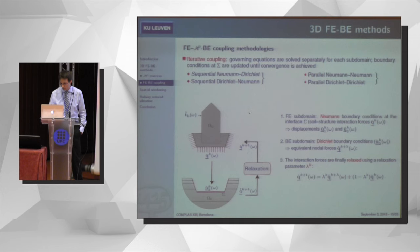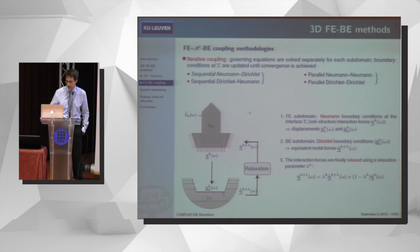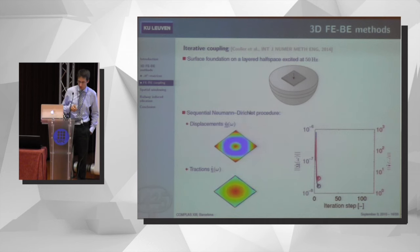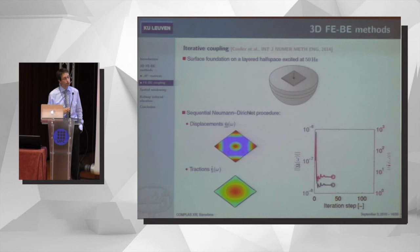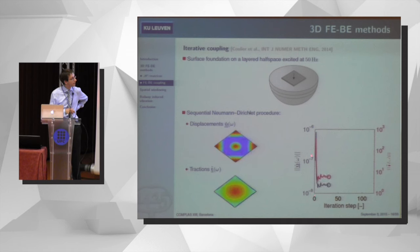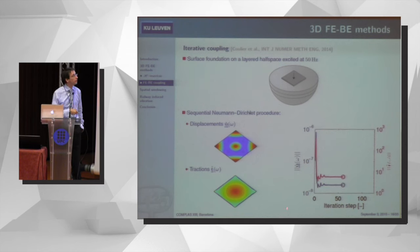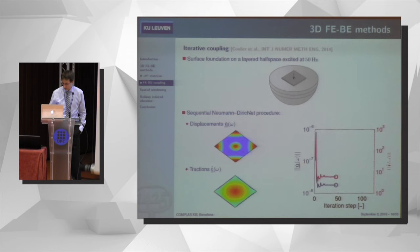You need to introduce relaxation with a relaxation parameter to ensure and speed up convergence. It's pretty hard to find a relaxation parameter that ensures convergence in all cases, and we have done some work on that. As an application: we have a surface foundation loaded at a frequency close to one of its resonance frequencies. You see the variation of displacements and tractions as a function of iteration step. At the beginning the process tends to diverge, and without relaxation you would immediately diverge and never converge to the actual solution. Including this relaxation step is very important.